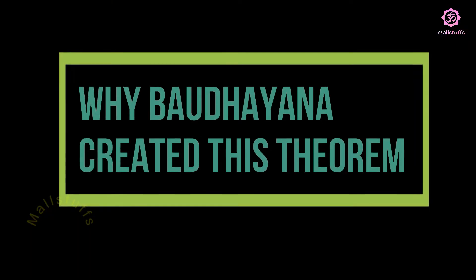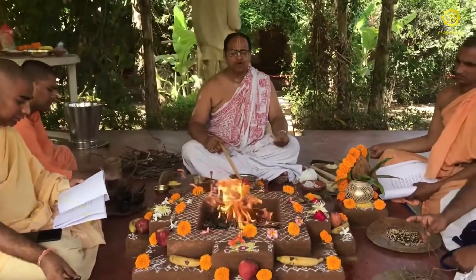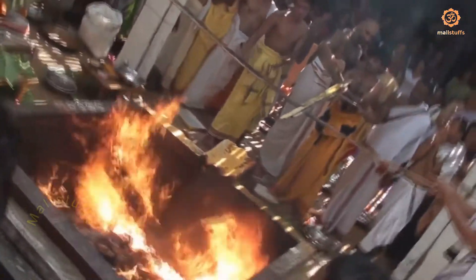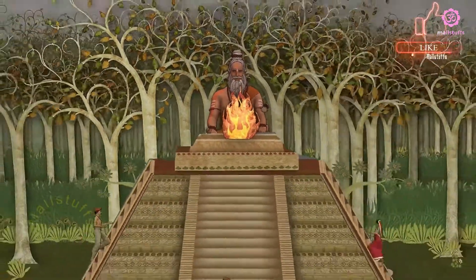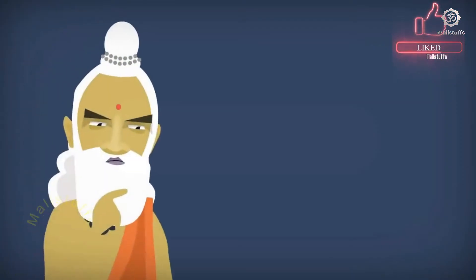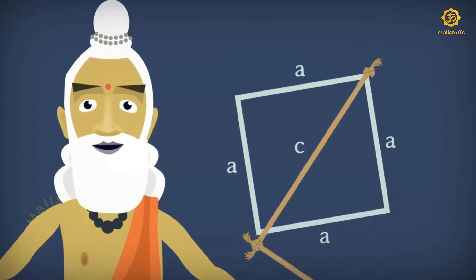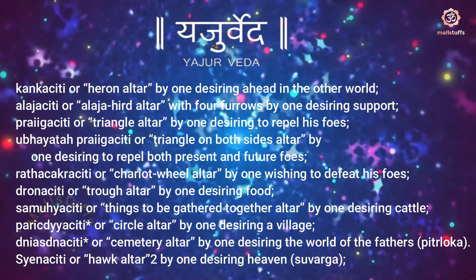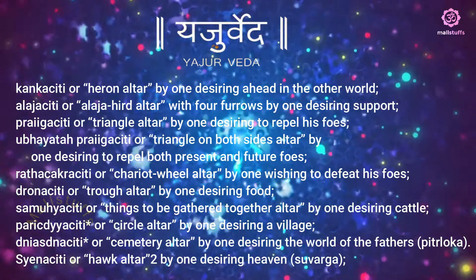Why did Bodhayana create this theorem? Performing Yagna is a very important ritual in Hinduism since time immemorial. Bodhayana was a master in performing Vedic rites, especially Yagnas. To do a Yagna, priests need a rectangular altar on which wood is burned to invoke God by chanting mantras. This rectangular altar must be of a specific length and breadth. To construct an exact altar, Bodhayana devised this hypotenuse theorem and proved it by measuring the altar with ropes of predefined width and length. Yajurveda enumerates the various possible shapes of altars. Bodhayana and Apasthamba furnished details on these types and the methodology used in the construction of these altars.